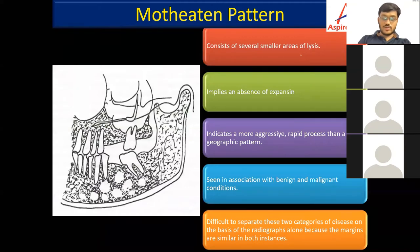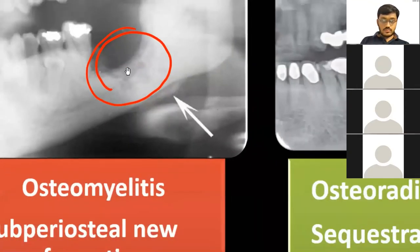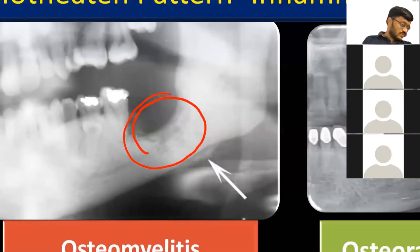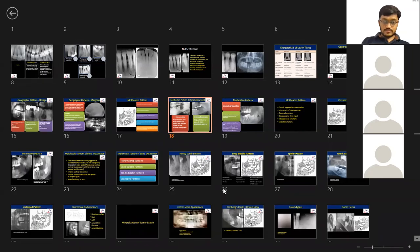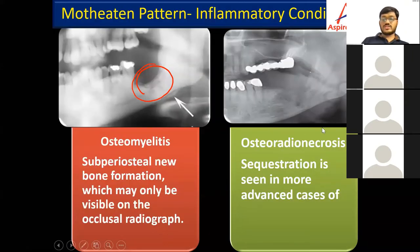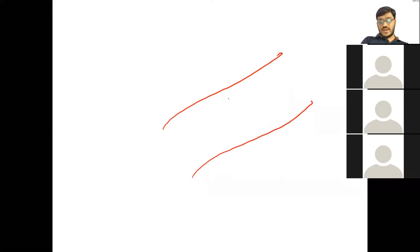The moth-eaten appearance is seen in osteomyelitis, consisting of several small areas of lysis, implying absence of expansion and indicating a more aggressive process. This can also be seen in benign or malignant conditions. In more advanced osteomyelitis cases, we see osteoradionecrosis with sequestration. The sequestrum is dead bone: if there is osteomyelitis or osteonecrosis, the dead bone is known as the sequestrum and it is surrounded by normal bone.